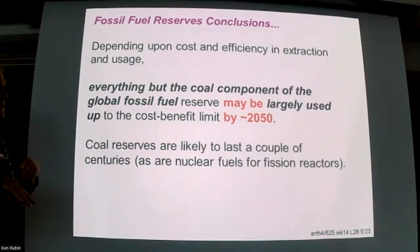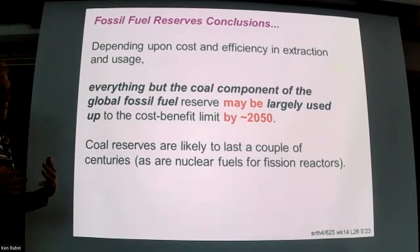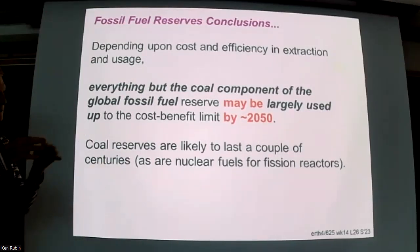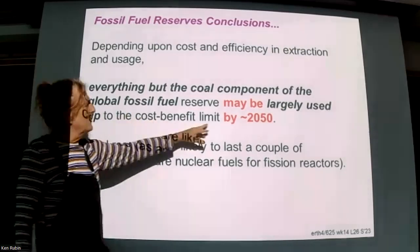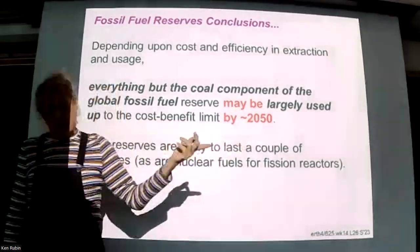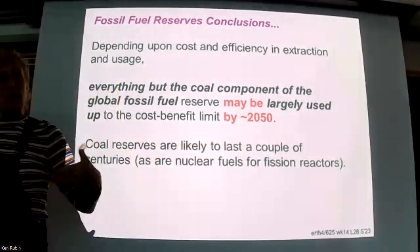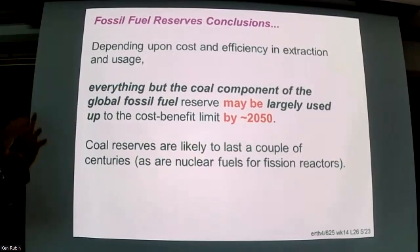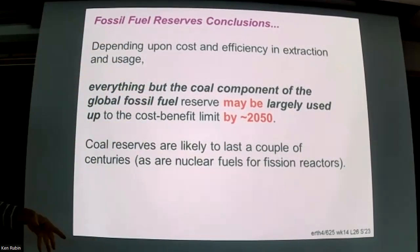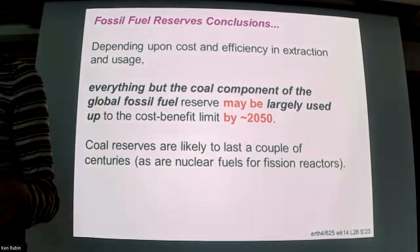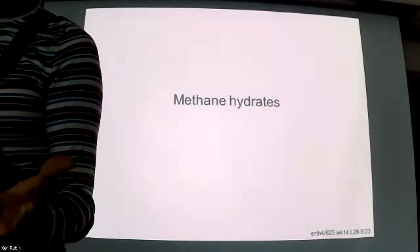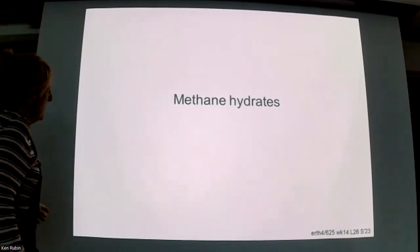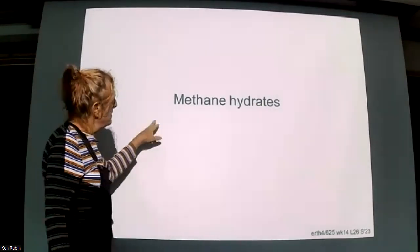Less conservative estimates accounting for hypothetical reserves and technological improvements may extend fossil fuel use as far as the year 2200. The key point: we are not going to run out of carbon anytime soon — certainly not before we need to mitigate climate change. We must employ technology and behavioral change to stop putting so much carbon in the atmosphere.